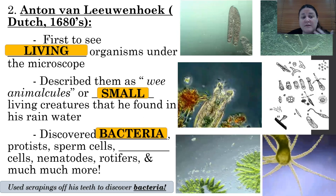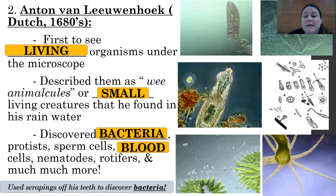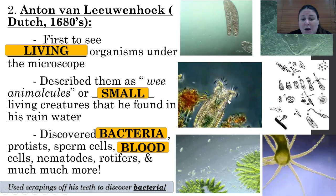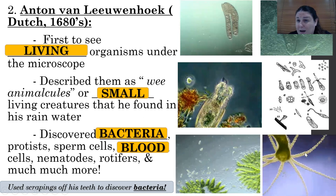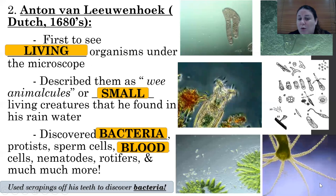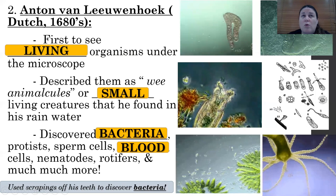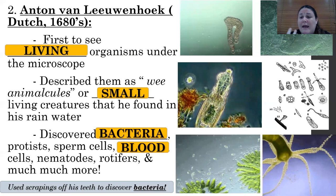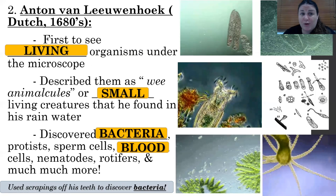He discovered things like bacteria from scrapings of his teeth, protists, sperm cells, blood cells, nematodes, and rotifers — which is this little organism right here. This organism down here that looks like a tiny octopus is known as a hydra, and we'll see the hydra again when we talk about asexual reproduction. You can see here these are his drawings, and that's one of the things we'll learn about — how important making accurate drawings through observations is. We'll practice with that when we learn about our microscopes.